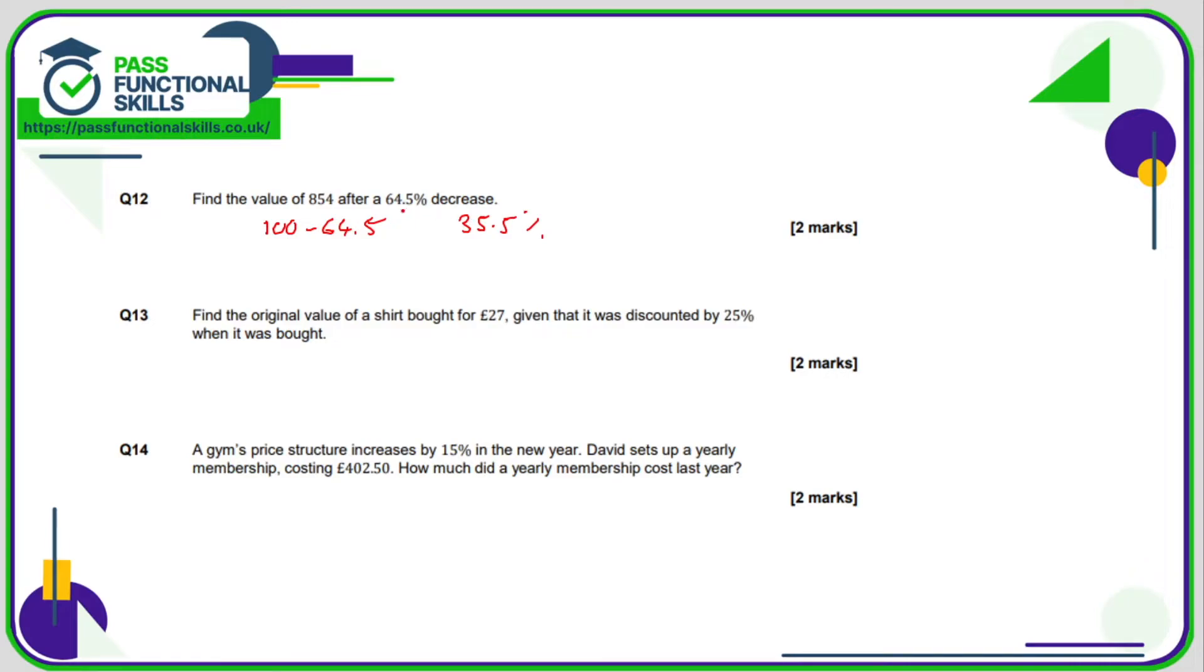So the calculation is therefore 0.355 multiplied by 854, and that comes to a total of 303.17.